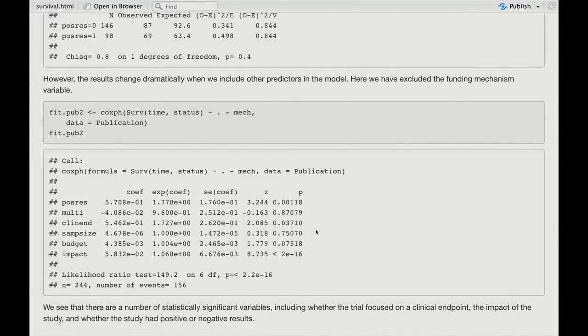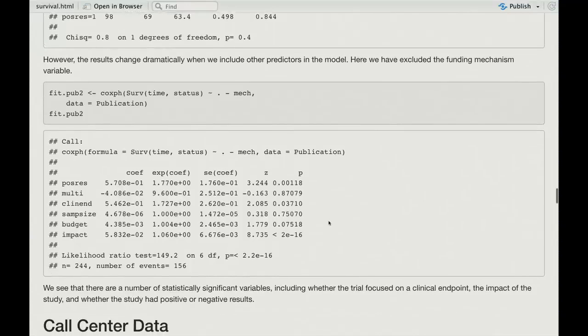So here we see there's a few significant variables. There's the impact, that's the impact of the journal, the impact factor, and that's significant. And this is whether it was a clinical endpoint or not, that's significant. And then, positive result is now significant in the presence of these other variables. So that's sort of curious. And this often happens. There's often confounding and masking in data. And when you put in other factors, then the strength of a predictor can actually come out. And that's what's happened here.